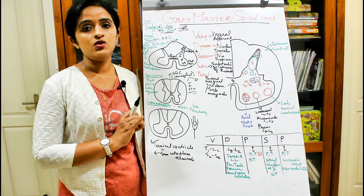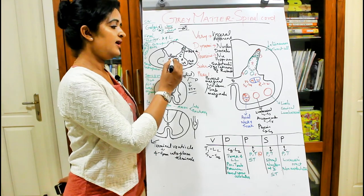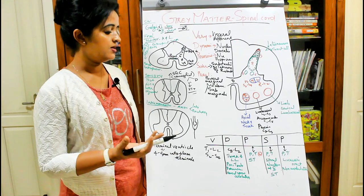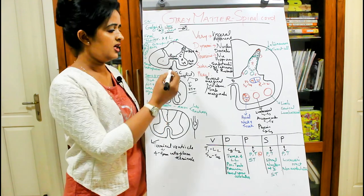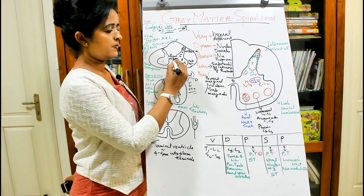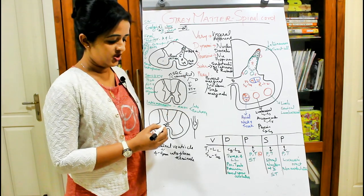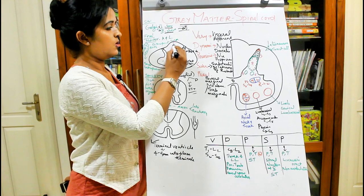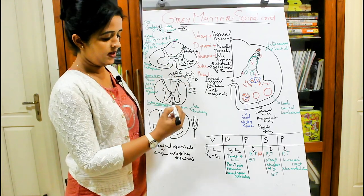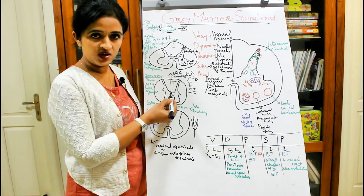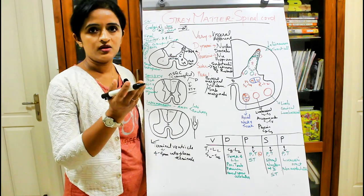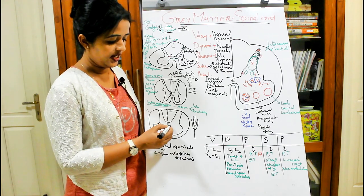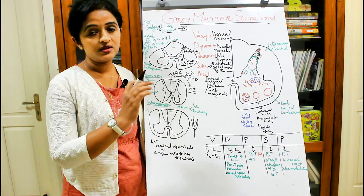The position of the central canal is not exactly in the center of the gray commissure throughout the spinal cord — it varies by level. In the cervical and thoracic regions it is more towards the ventral aspect. In the lumbar region it is almost in the center of the gray commissure. Moving towards the caudal aspects, the central canal shifts towards the dorsal aspect.